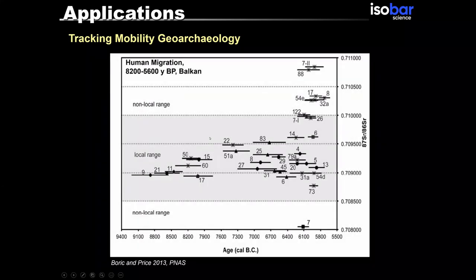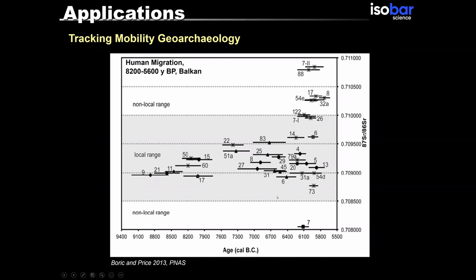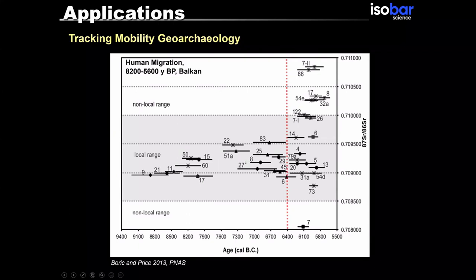Here's another example in the Balkans. The time frame starts from 9,400 years ago all the way to 5,500 years ago. They established the background values for strontium and then analyzed different human remains. In the majority of the samples, they are showing the local signature. However, sometime around 6,400 years ago, they start seeing the emergence of new arrivals in the region.